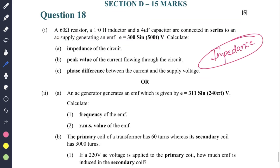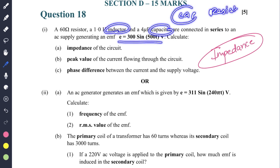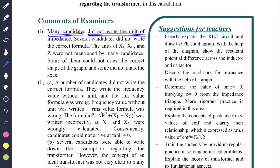Then questions on impedance are also very important - like inductor and capacitor might be given, capacitor or resistor might be given, all three might be given. So they'll ask you to calculate the impedance. Many candidates did not write the unit of impedance and several candidates did not write the correct formula. The units of XL, XC and Z were not mentioned by many candidates. Some of them could not draw the correct shape of the graph.